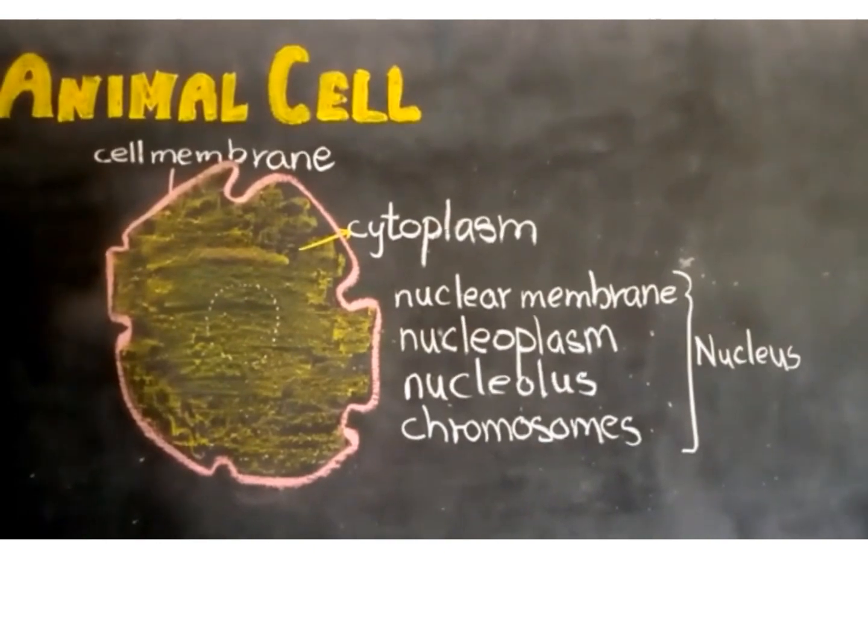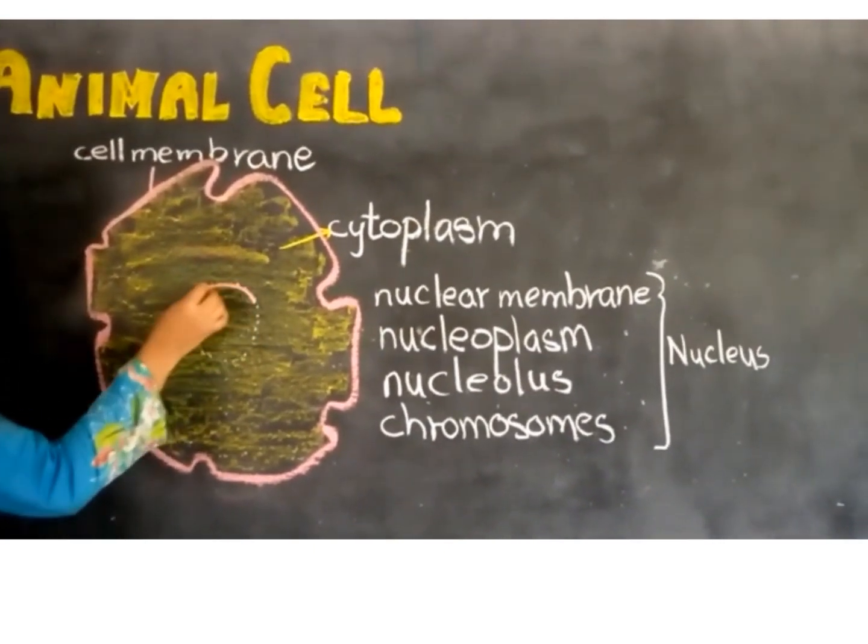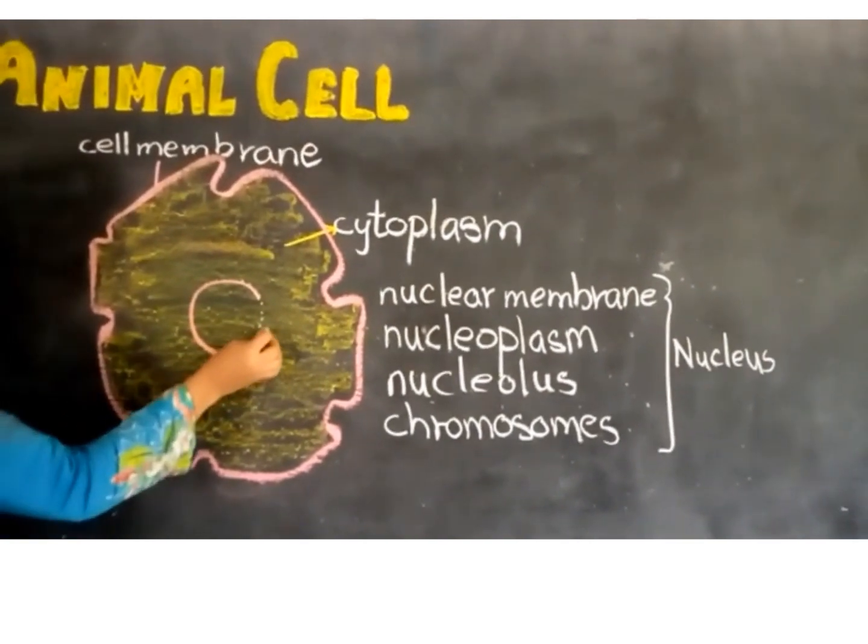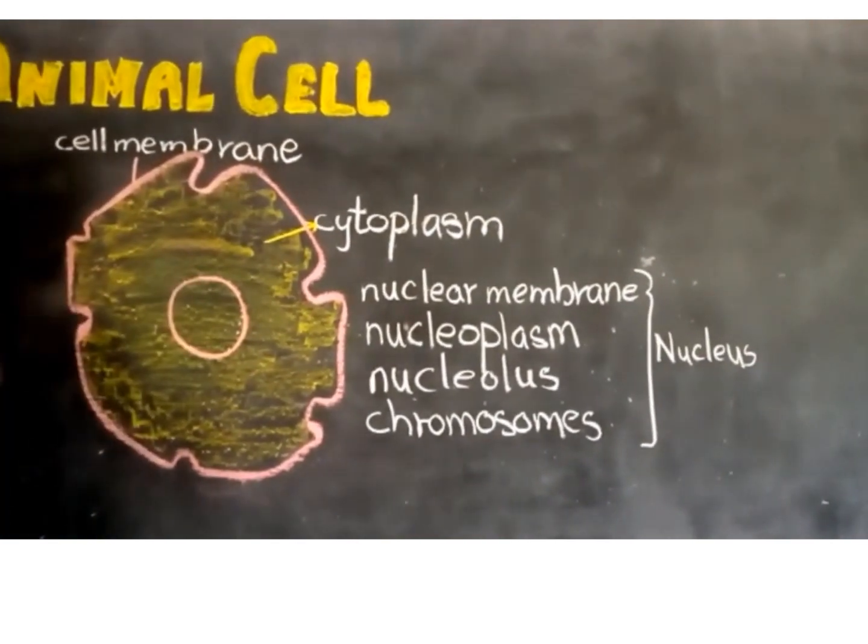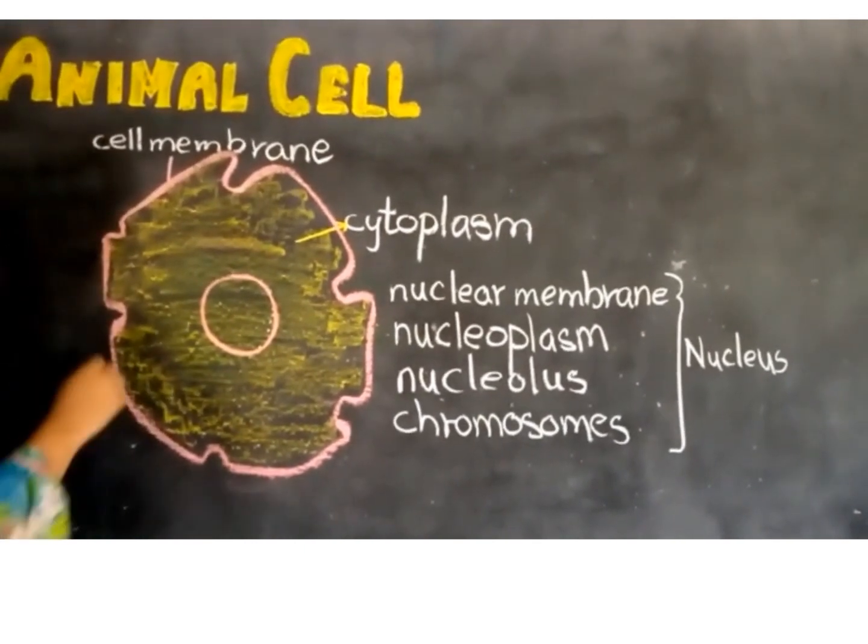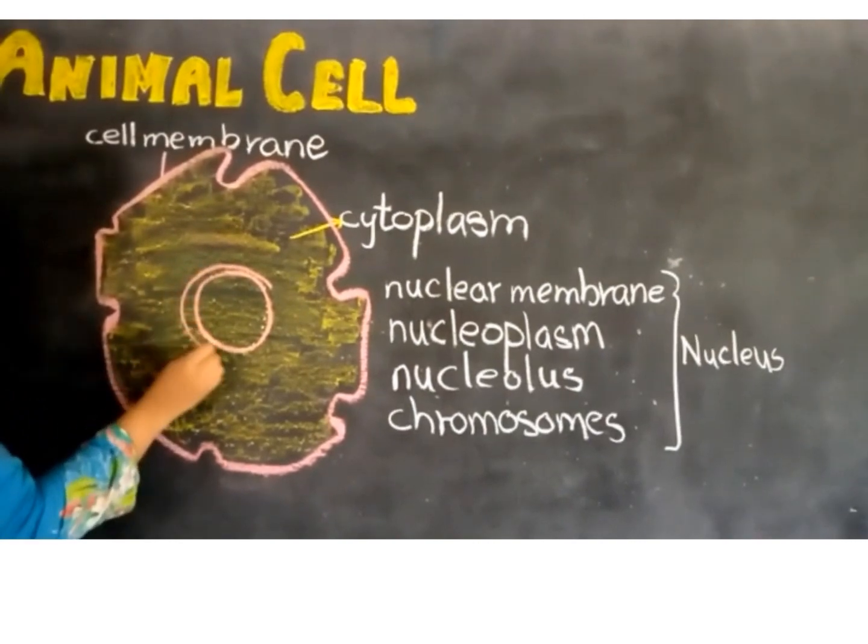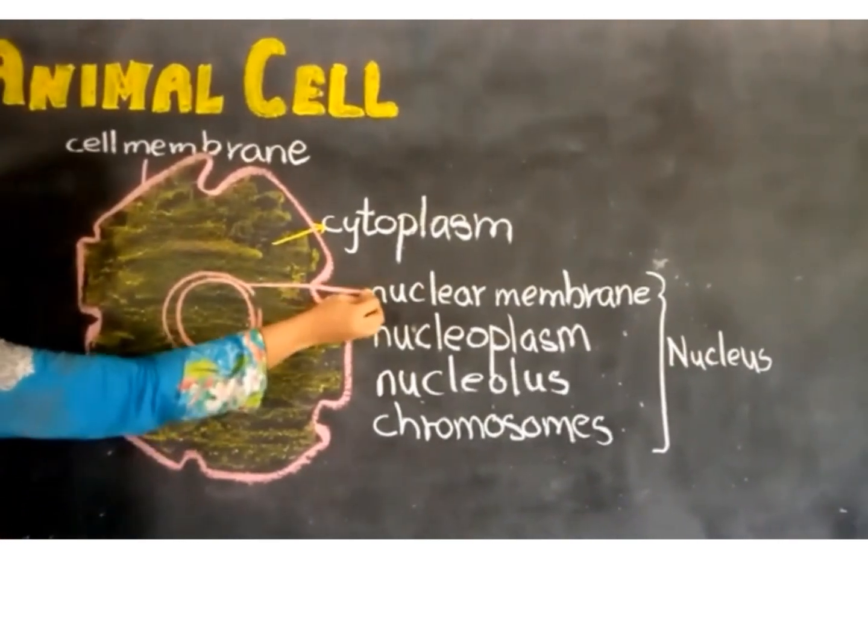The most important and prominent structure of the cell is the nucleus. The nucleus controls the various activities of the cell. The outer covering of the nucleus is known as the nuclear membrane.